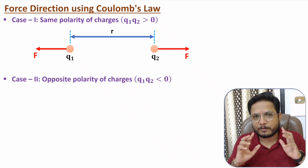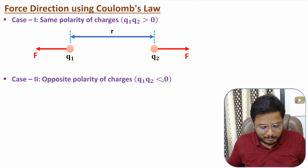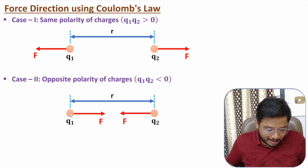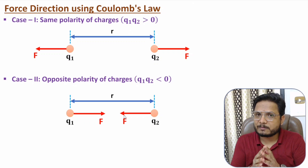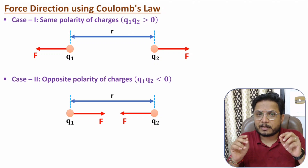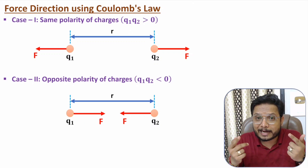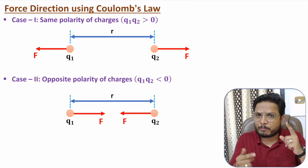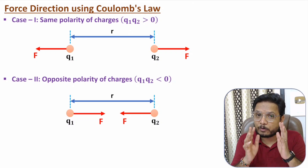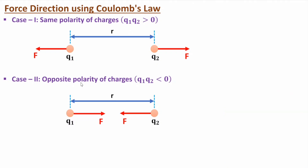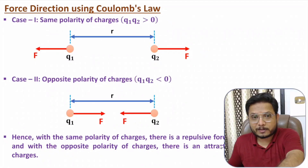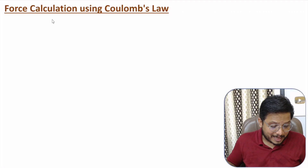In the second case, we consider opposite polarity of charges — one charge is positive and the other is negative. In this case q1 × q2 is less than zero, and the force between the two point charges will be attractive. So direction of force depends on polarity: same polarity gives repulsive force, opposite polarity gives attractive force.